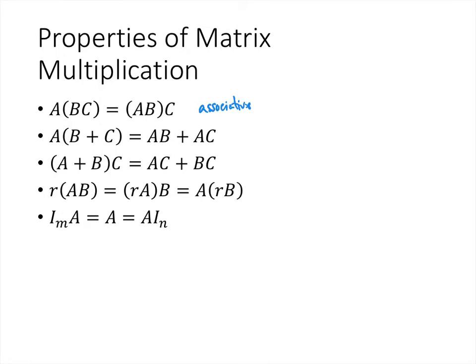The second and third properties are both distributive properties, and these tell us how matrix multiplication interacts with matrix addition. The fourth property is a kind of associativity, but it tells us that when we have a scalar multiple, we can multiply the matrices together and then multiply the scalar, or multiply the scalar by the first matrix and then multiply the second matrix, or even multiply the scalar by the second matrix and multiply the first matrix.